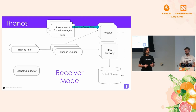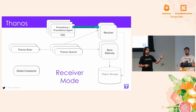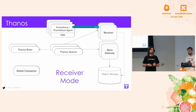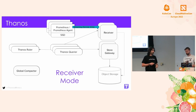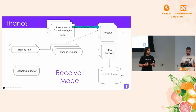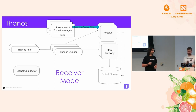One last deployment option: we also have a component called Thanos Receiver, which gives you the ability to push metrics directly to another storage. Depending on your network topology you may find this useful rather than a pull-based model.